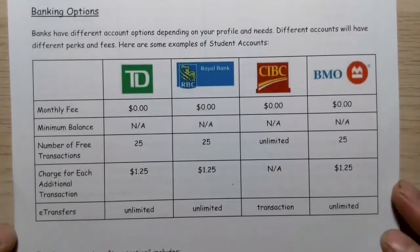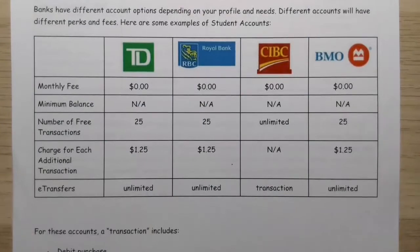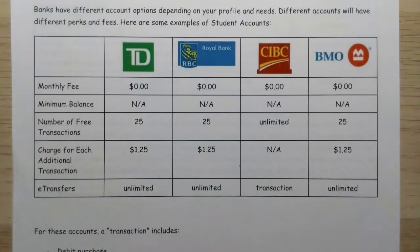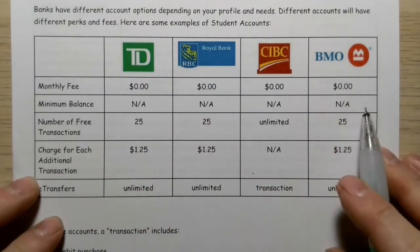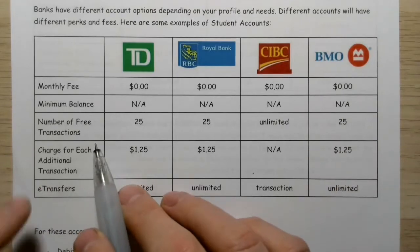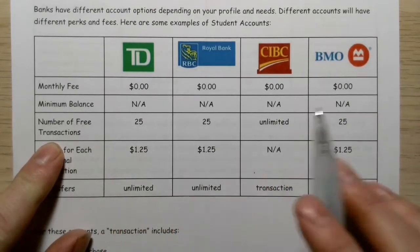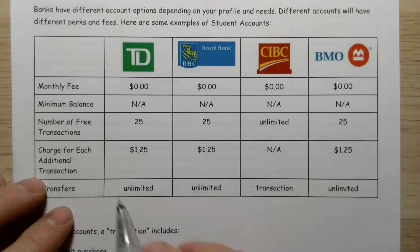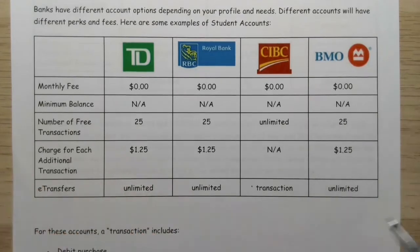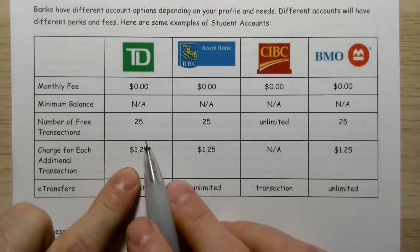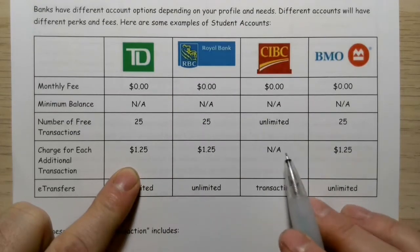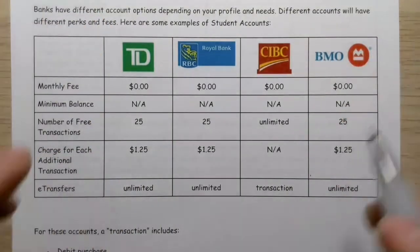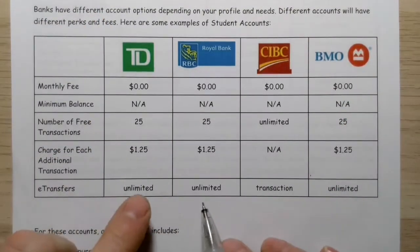Here are some examples of student accounts. We've got TD, Royal Bank, CIBC, and BMO. For monthly fees, for students there are no monthly fees and no minimum balance. For the number of free transactions, TD, Royal Bank, and BMO allow 25, but CIBC has an unlimited number. For each additional transaction beyond 25, it's going to cost $1.25 — not applicable for CIBC since it's unlimited. For e-transfers, you've got an unlimited number across these accounts.